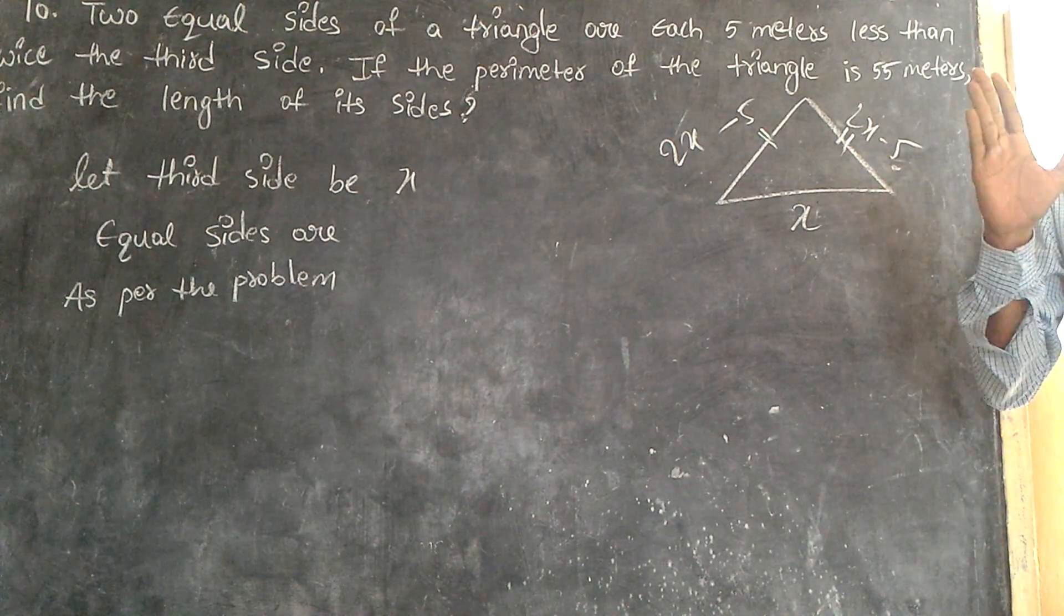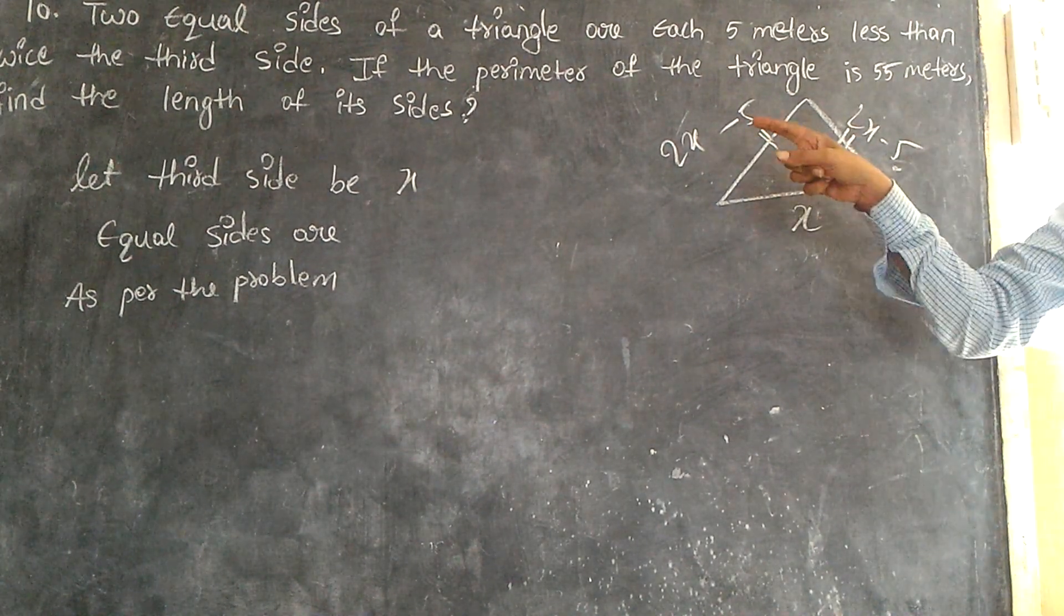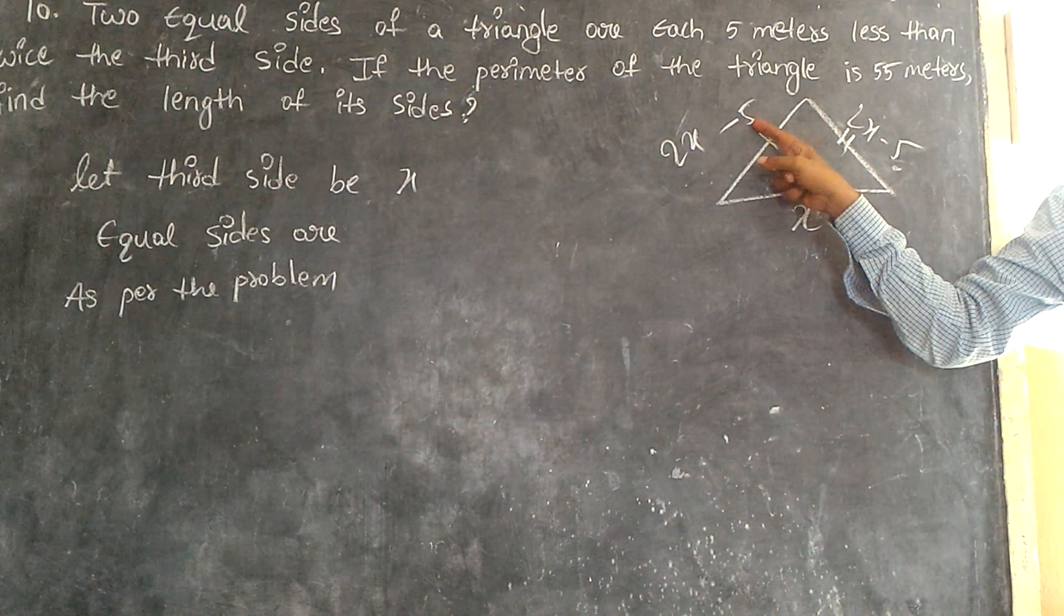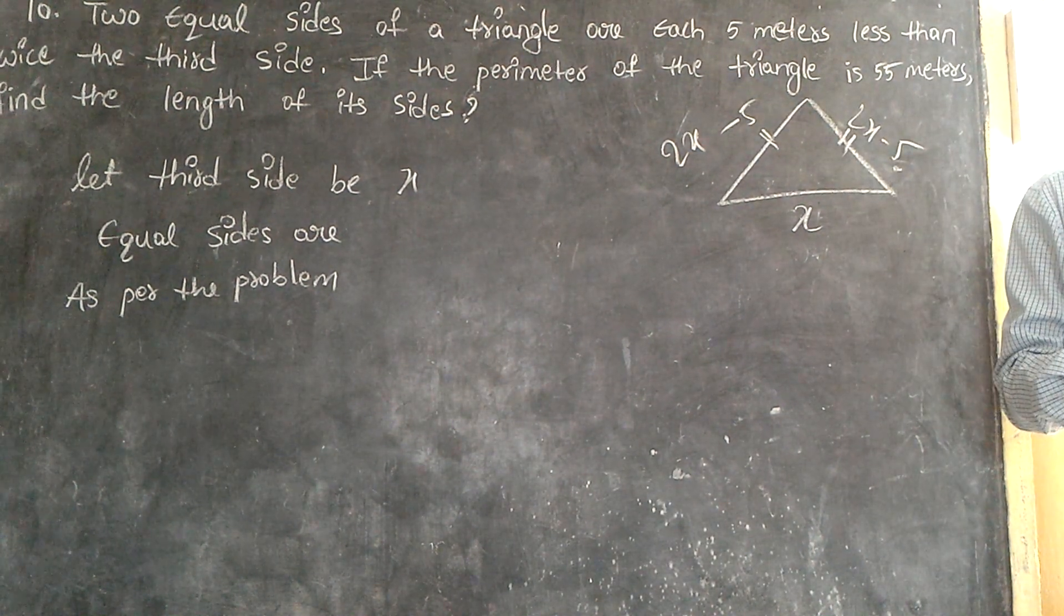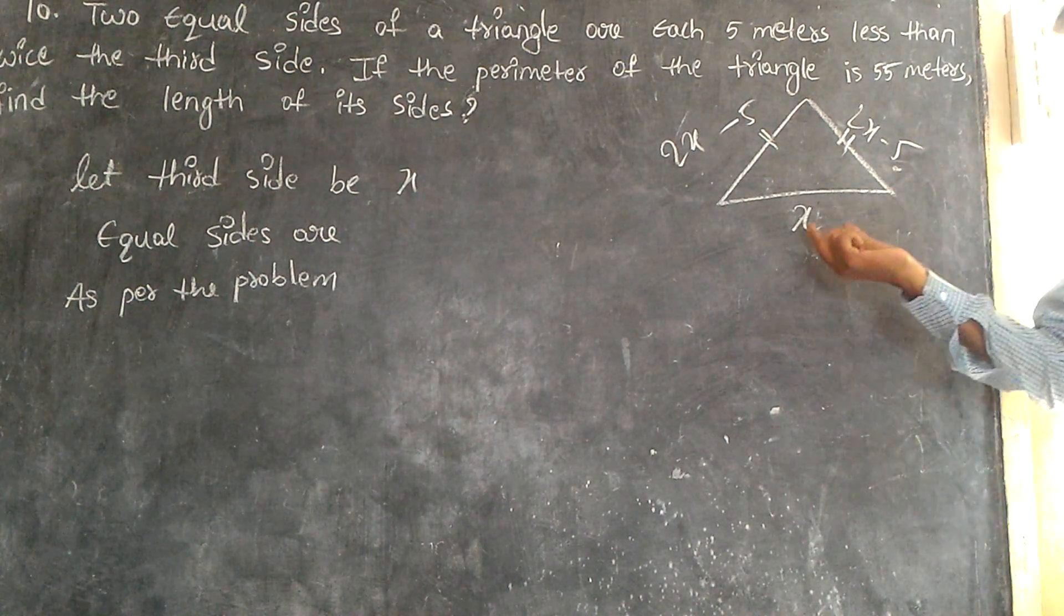The equal sides are 5 less than - 5 less means subtract - and twice the third side. Third side: keep it twice and subtract 5.